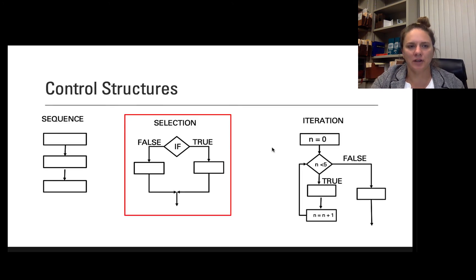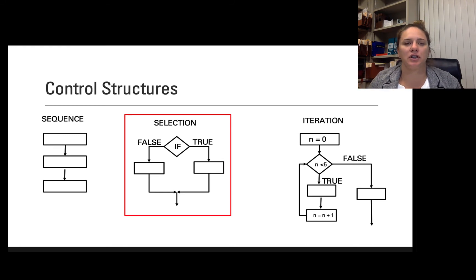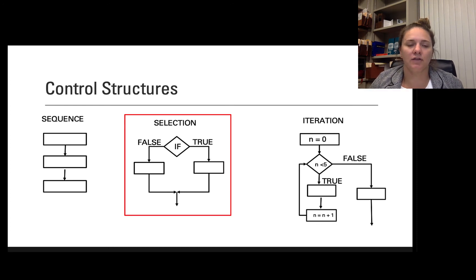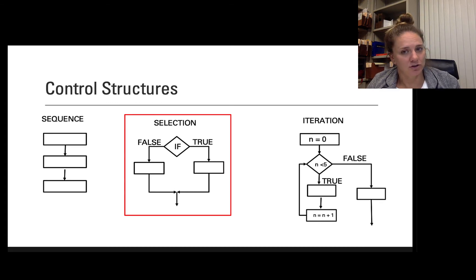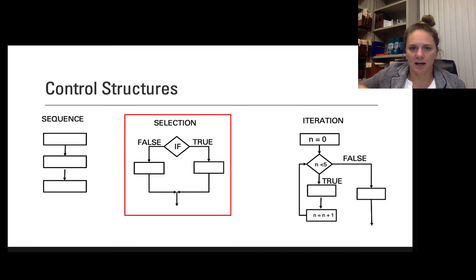To get started, a reminder of where we are. In my previous video I talked to you about flowcharts and the three different types of control structures that are very common in writing algorithms and computer programming. We've spent all of our time so far looking at sequence structures, and now we're going to move into selection structures, and then visit iteration structures next.